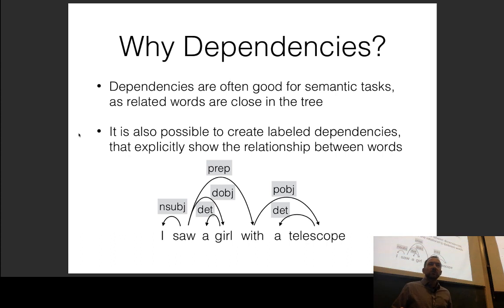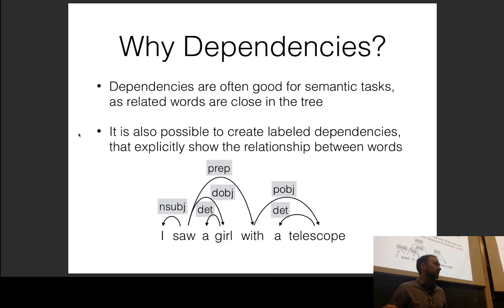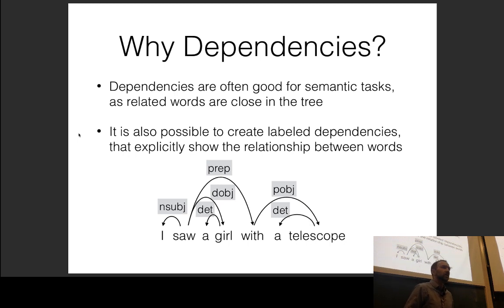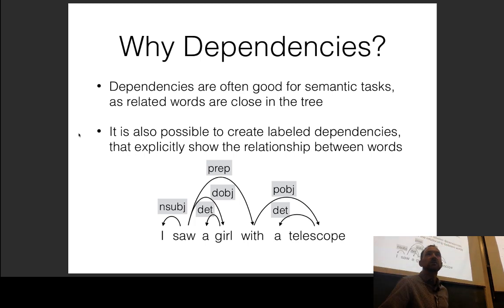A few years ago, tree structures were also recommended for building systems — for example, extracting features for a text classifier. Honestly, it's a little less clear now whether tree structures give convincing gains. I'll give one example later where they do, but I think the more interesting application is when you want to physically and manually examine your data.